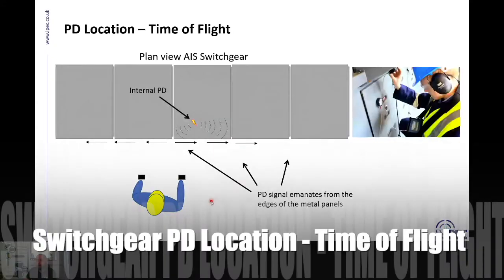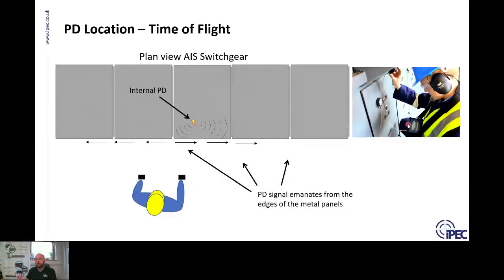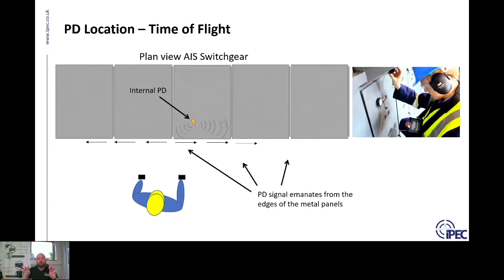With the IPEX PDSG1, we have two channels designed for time of flight. The resolution between them is 240 picoseconds, giving a distance resolution of the TEV signal to about eight centimeters. As signals escape from the switchgear and travel along its surface, the two sensors allow the system to alert you as to which sensor detected the signal first, so you can slowly move across the switchgear to pinpoint the PD.